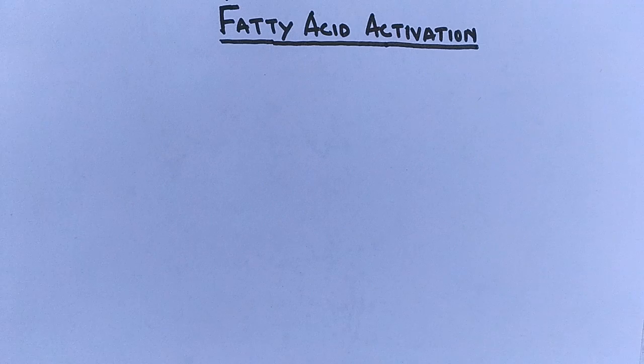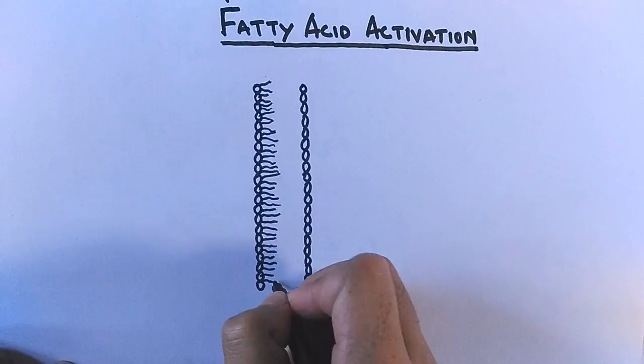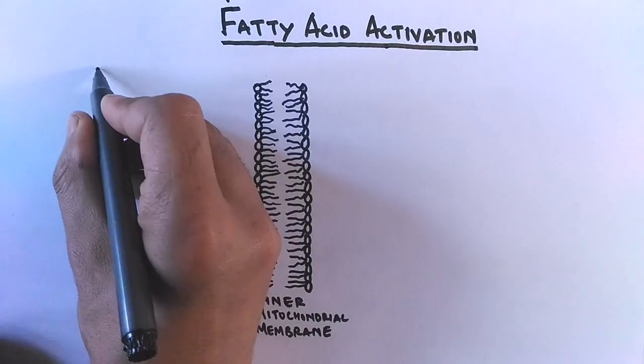But this oxidation, more preferably we can say the beta oxidation, occurs in mitochondrial matrix. If we see here we have the barrier in the form of inner mitochondrial membrane. There is also an outer mitochondrial membrane but it's permeable to all things. On the left side we have cytosol and on the right side we have mitochondrial matrix.